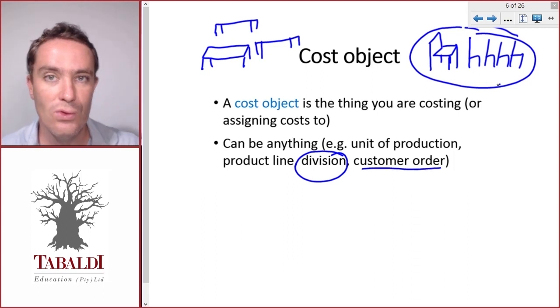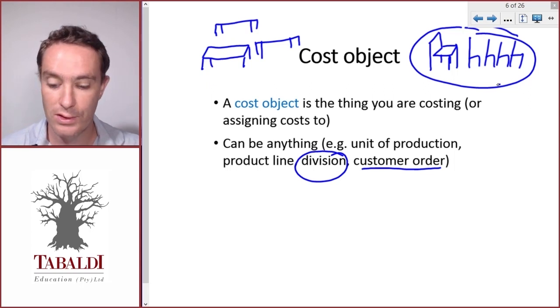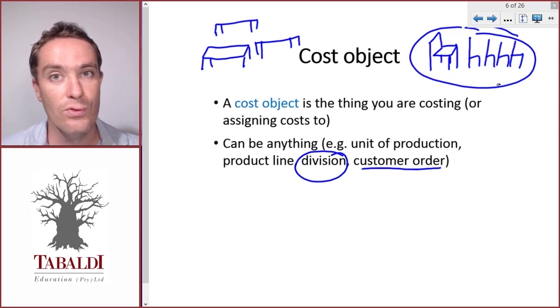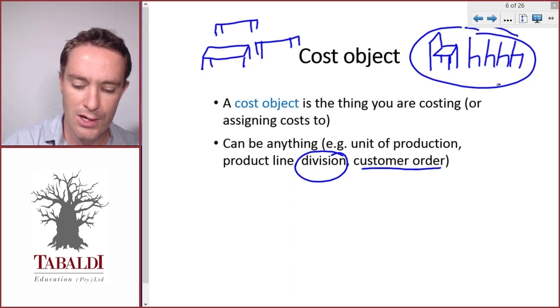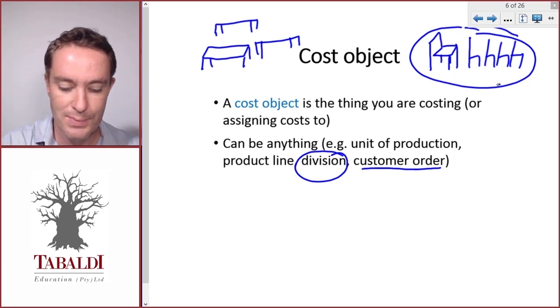It could even be something like a customer order. Someone places an order for a custom-designed wooden bed, and that customer order is the cost object. Which costs did we expend to fulfill that customer order? Let's look at a different example that might explain it a little bit better.